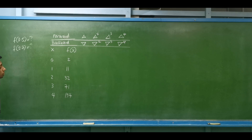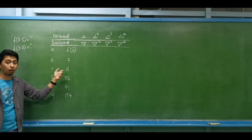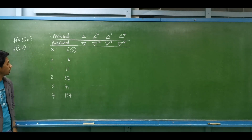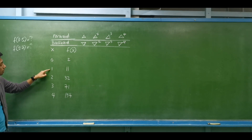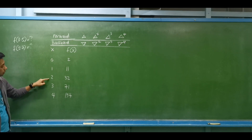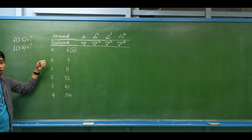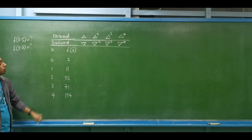One condition for using this method is that we have equal intervals for the values of x. As you can see, the equal interval is 1-0, 2-1, 3-2, and 4-3, so a common difference of 1.